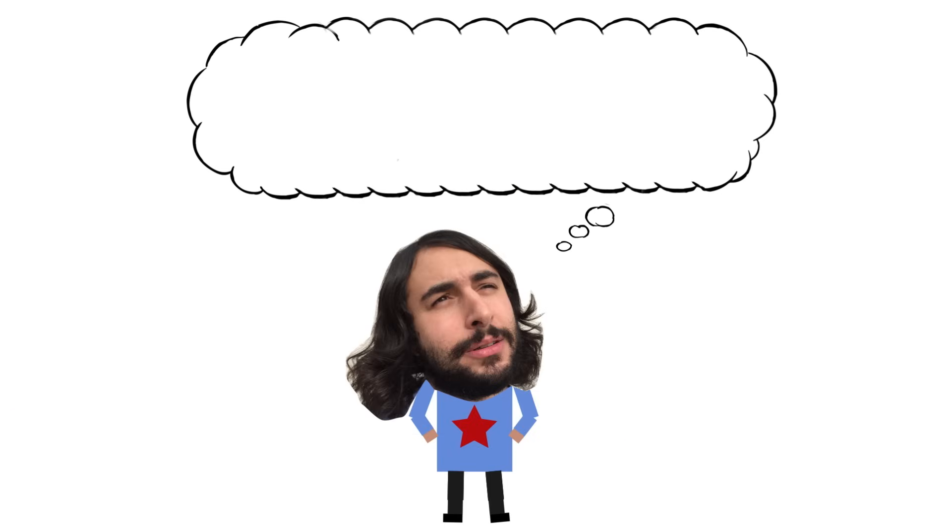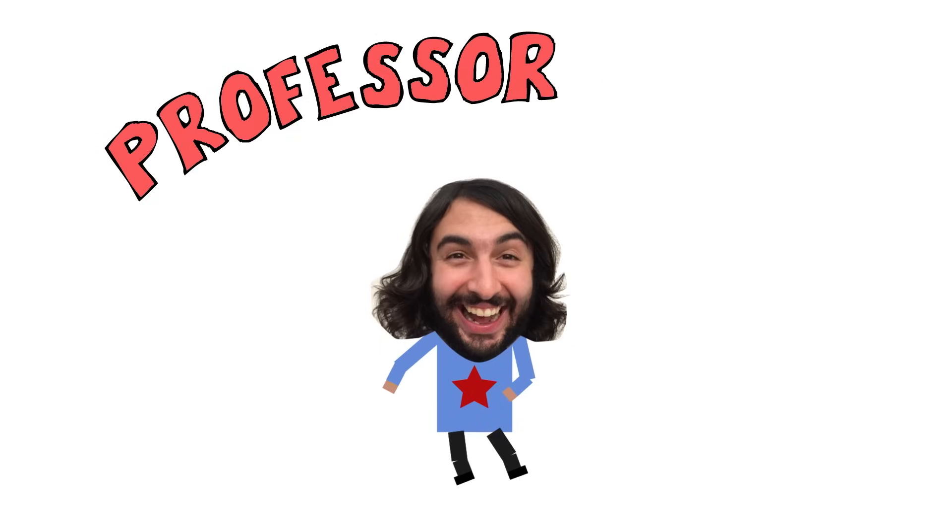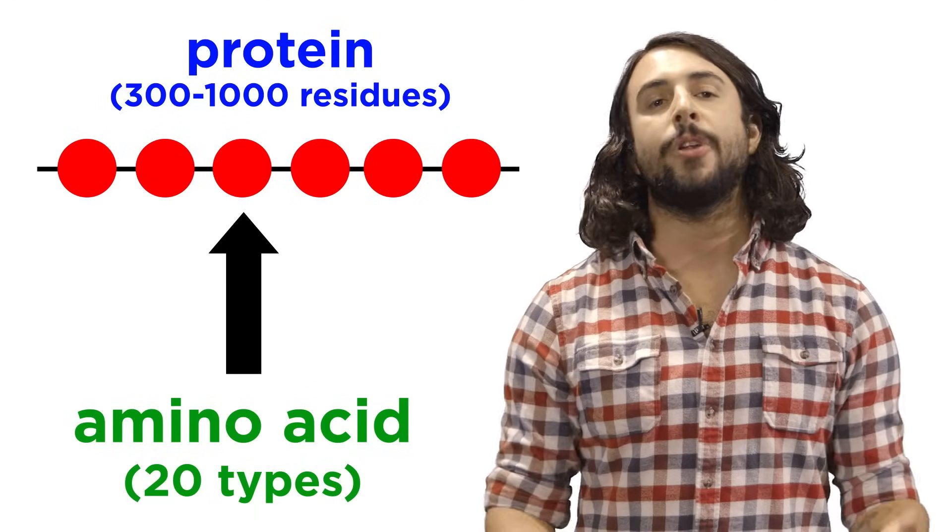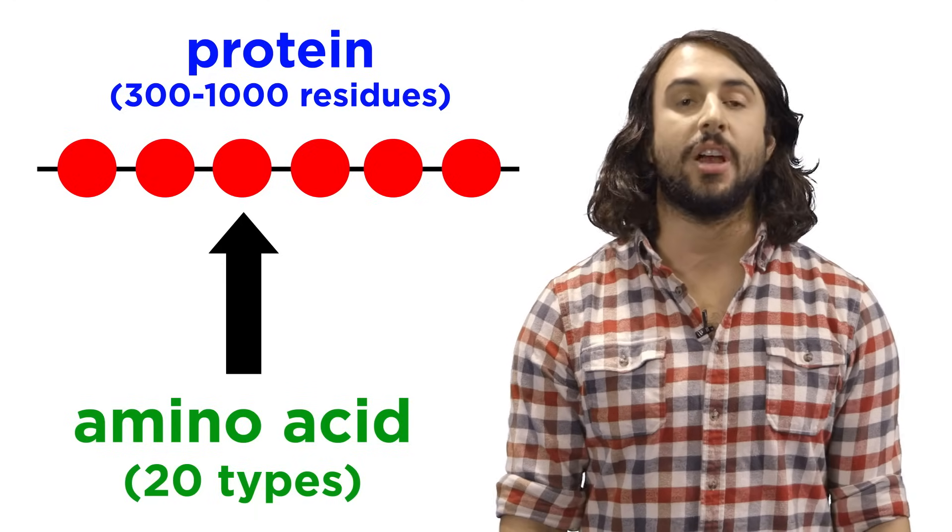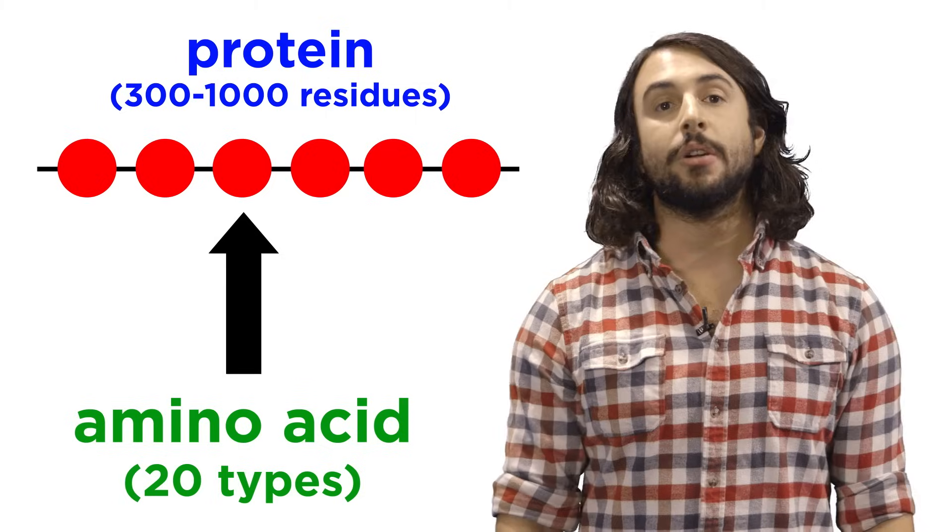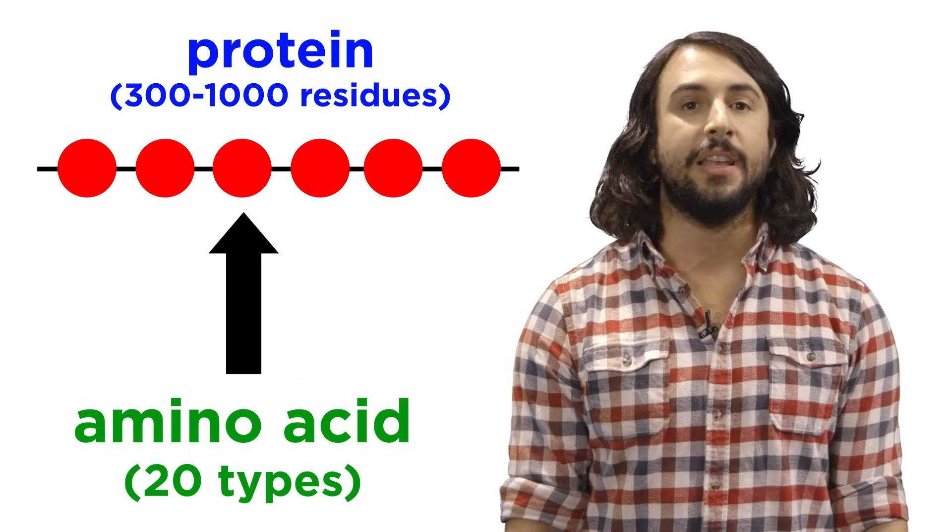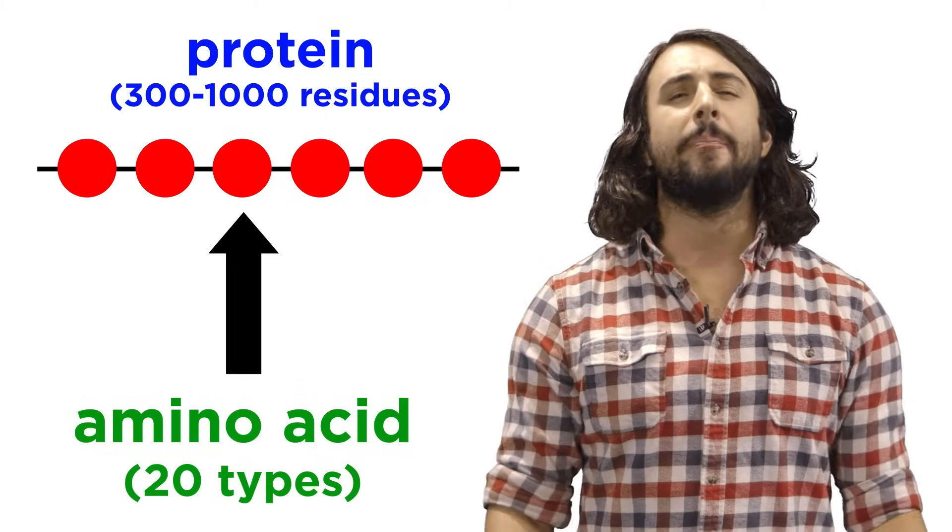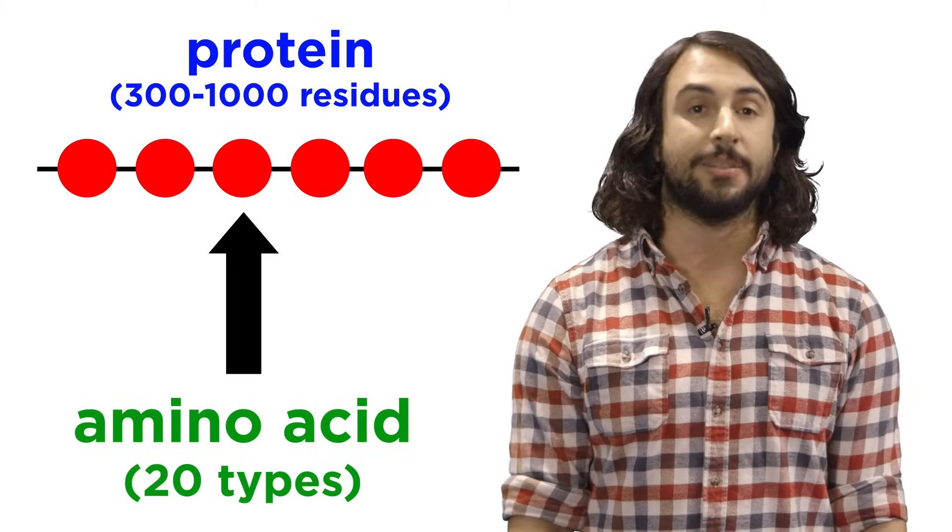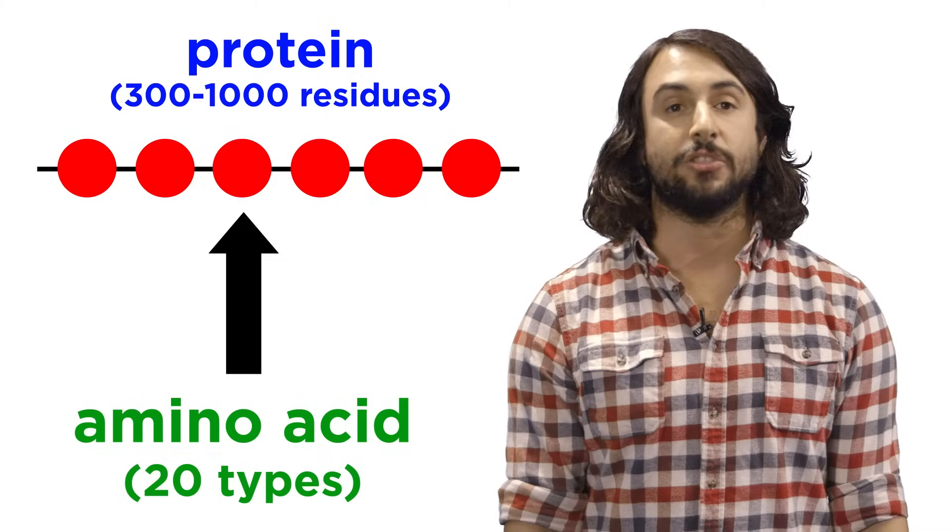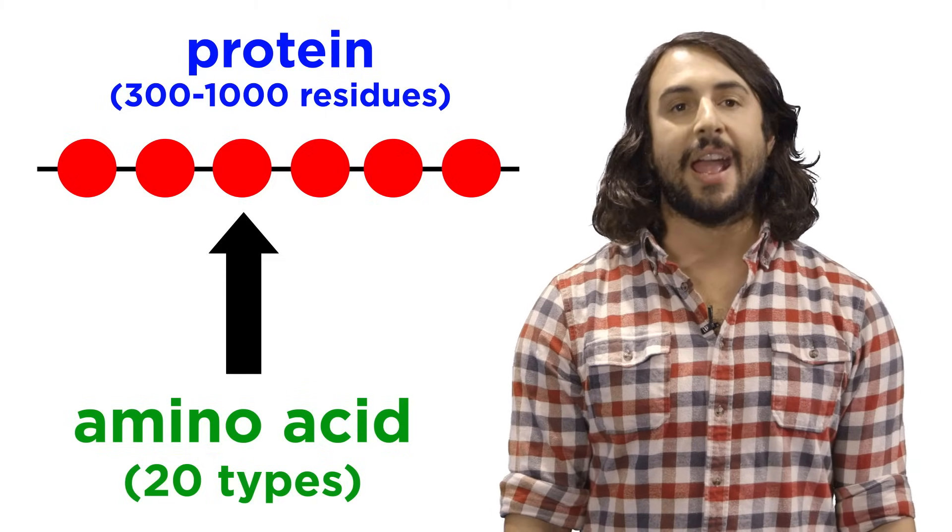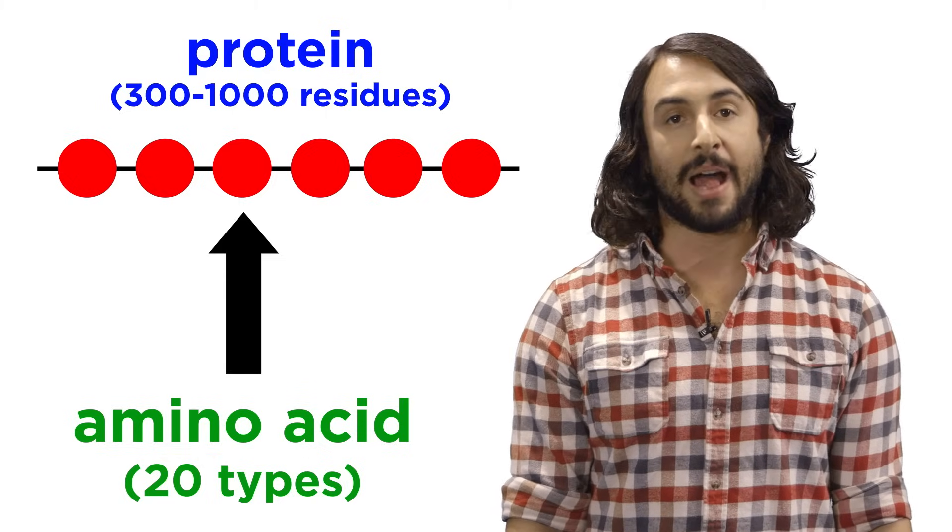Professor Dave here, let's learn about enzymes. We now know that proteins are polymers of amino acids, and since there are twenty amino acids in the body, and each protein has hundreds of amino acids, there are a mind-boggling number of possibilities for primary protein structure. This is how proteins can be so diverse and serve so many functions in the body.